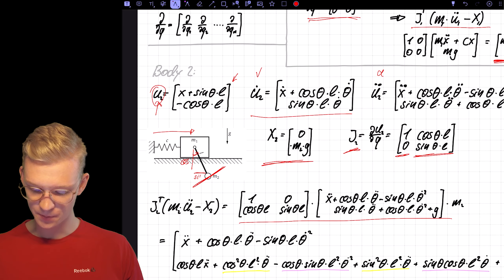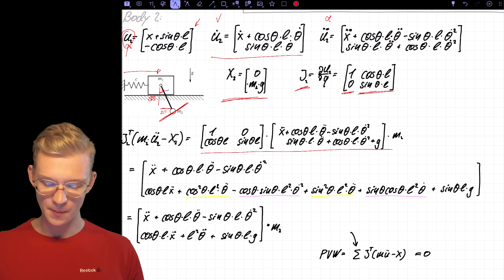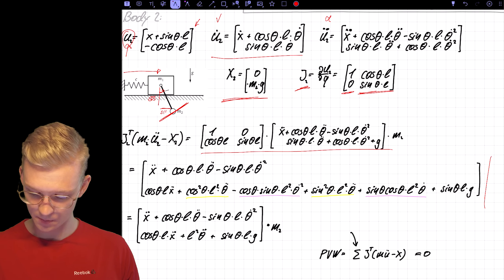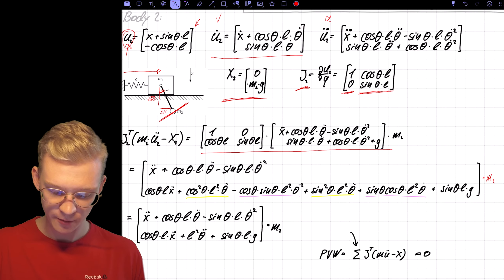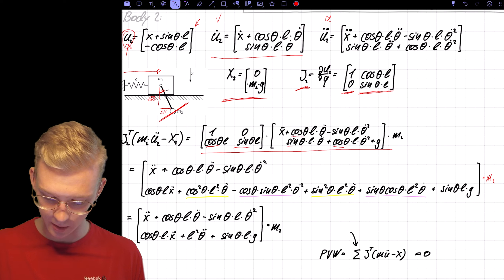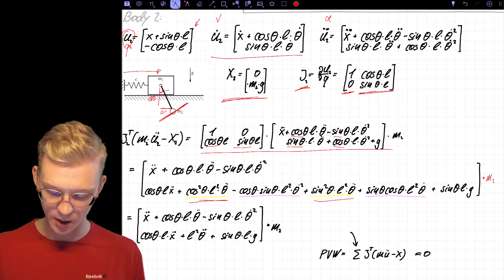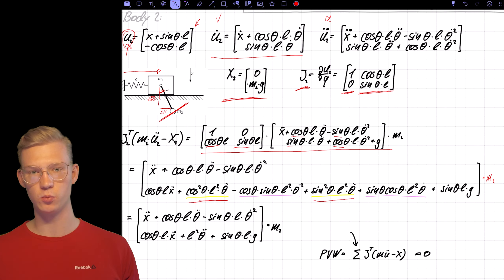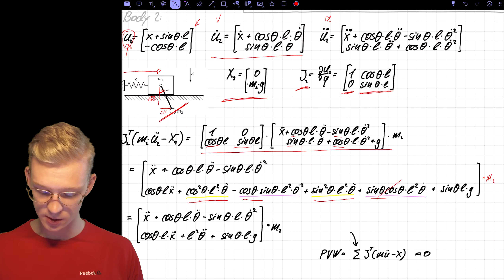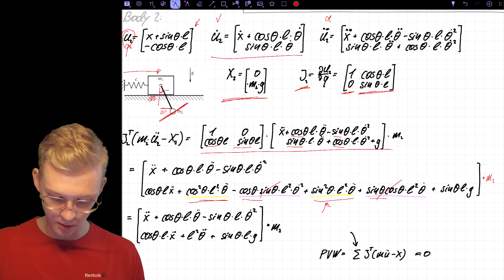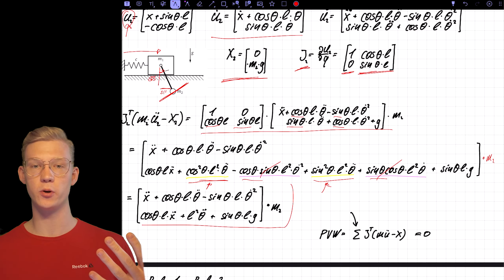Plugging in the numbers is significant effort, and we get this big equation. I see that I forgot to multiply by mass 2 here. Because we have a lot of sine and cosine terms, we can do a significant simplification: cosine squared plus sine squared equals 1, and the minus cosine sine plus cosine sine terms cancel out. And we get the equation of motion for our second mass.